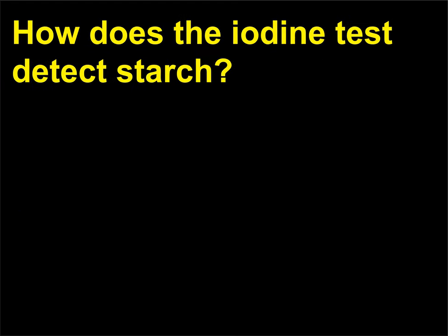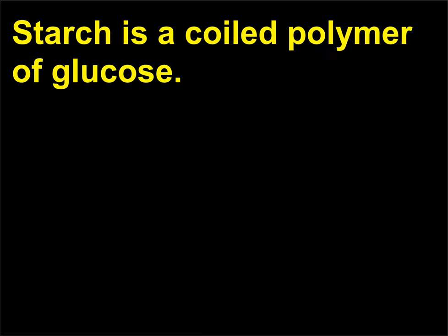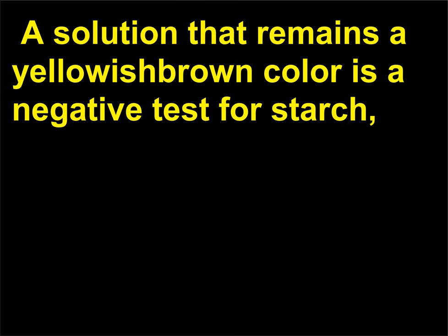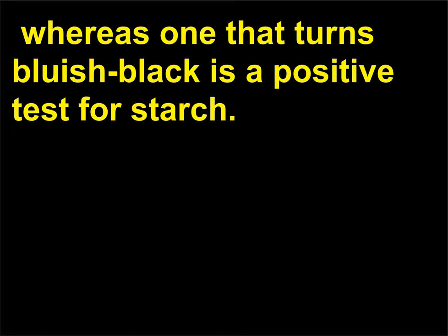How does the iodine test detect starch? Starch is a coiled polymer of glucose. Iodine reacts with the coiled molecules and turns bluish-black when added to a solution containing starch. A solution that remains a yellowish-brown color is a negative test for starch, whereas one that turns bluish-black is a positive test for starch.